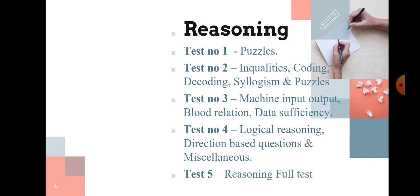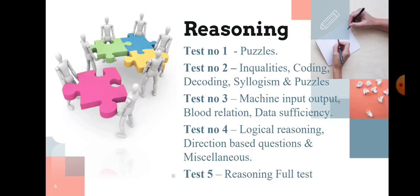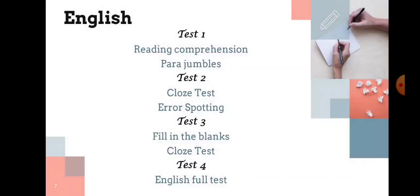Test number three: machine input output, blood relation, data sufficiency - 100 questions. Test number four: logical reasoning, direction-based questions and miscellaneous questions - 100 questions. Test number five: reasoning full test.